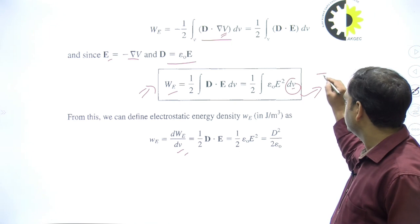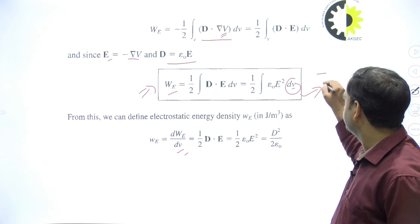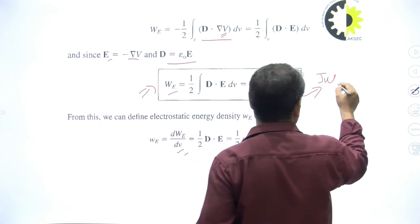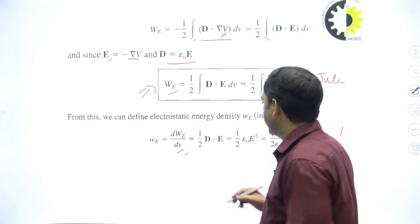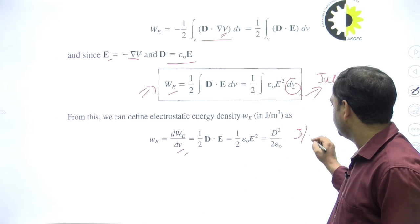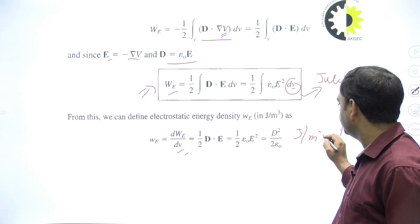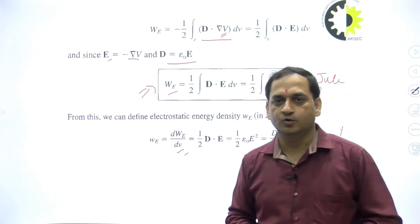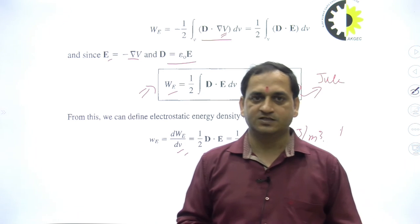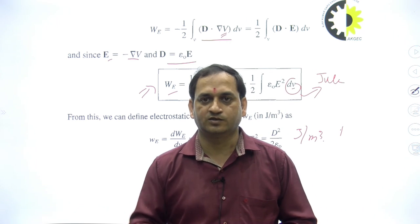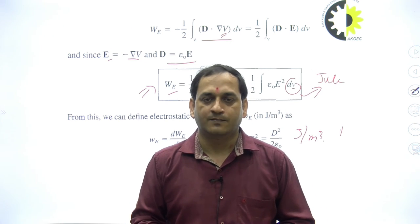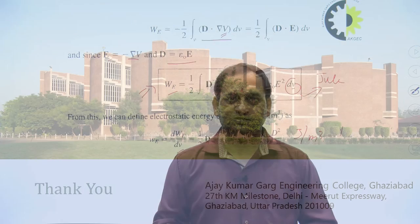The unit here is Joules, and the energy density will be Joules per meter cubed. I hope this point is clear to all of you. Please go through it and practice it — then only you can understand the concept behind the energy density. Thank you very much.